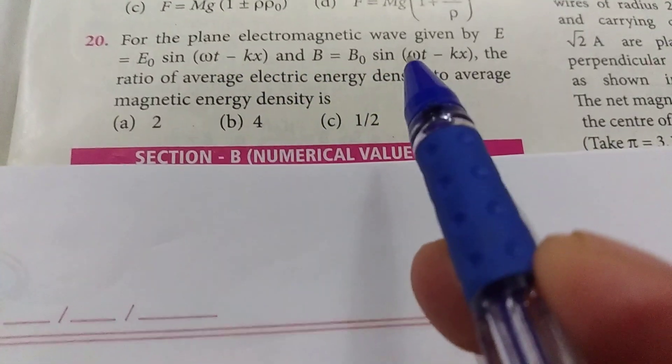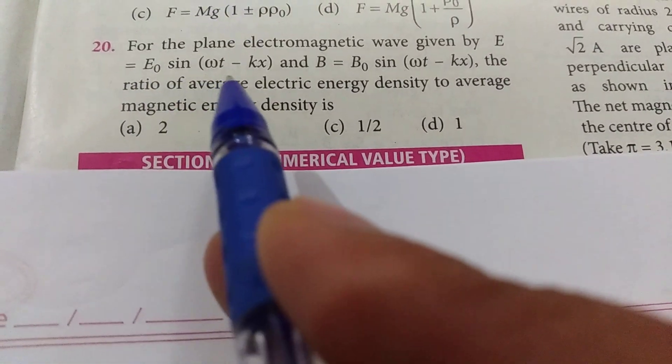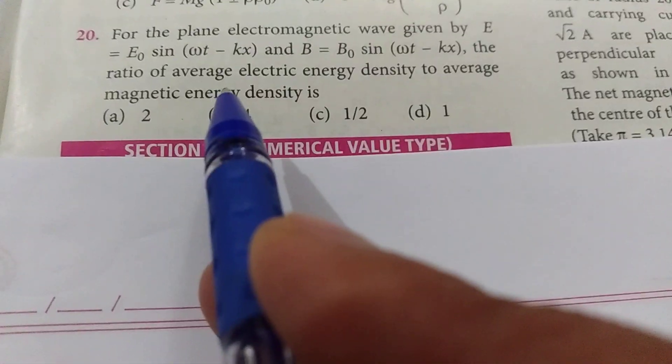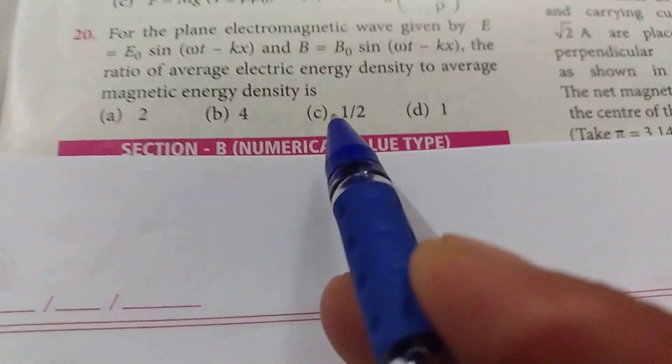So here we are asking: electromagnetic wave is given by E = E₀ sin(ωt - kx) and B = B₀ sin(ωt - kx). The ratio of average electric energy density to average magnetic energy density.